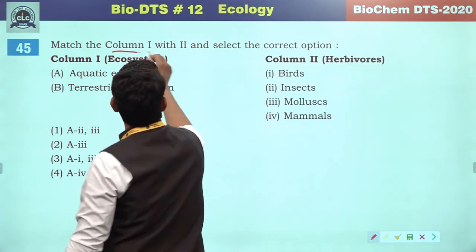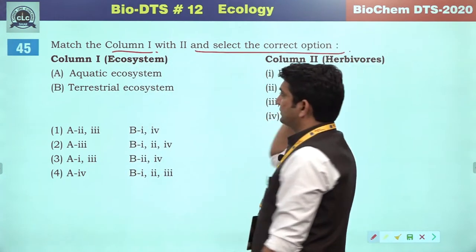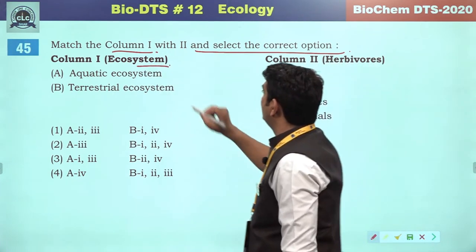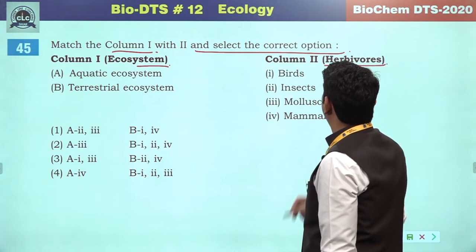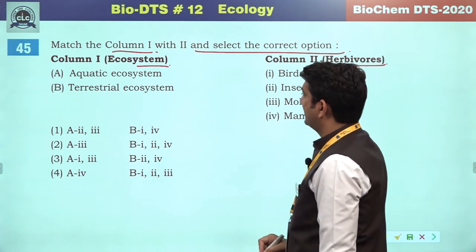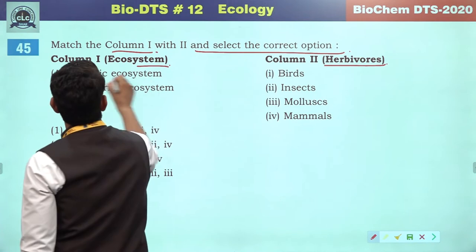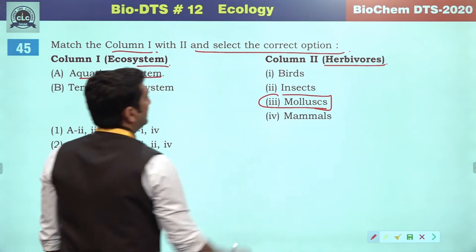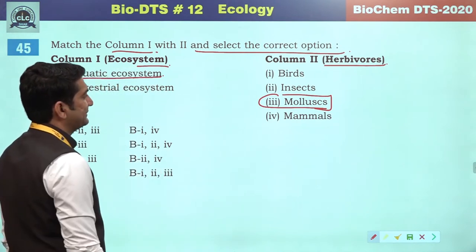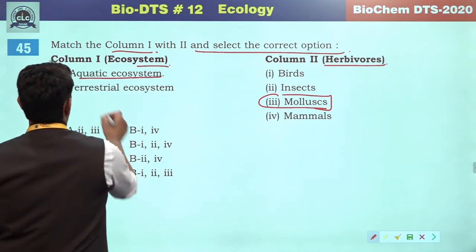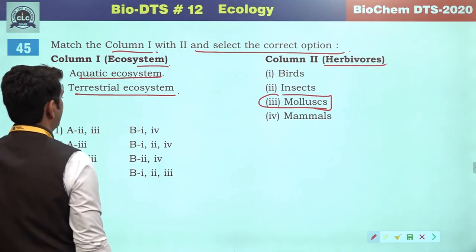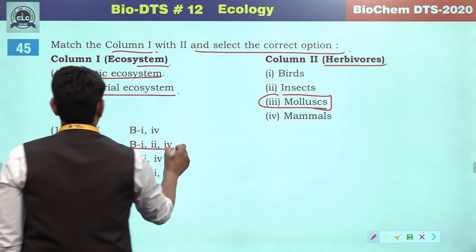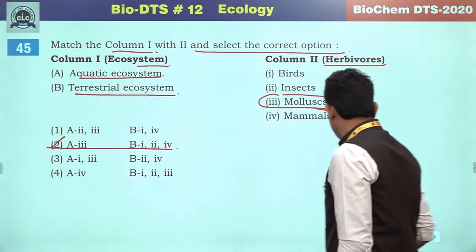Match column one and select the correct option. Column one has ecosystems and column two has herbivores. In aquatic ecosystems, herbivores can be mollusks — insects, birds and mammals are less likely. In terrestrial ecosystems, birds, insects and mammals can be the herbivores. So the second will be the correct reference.